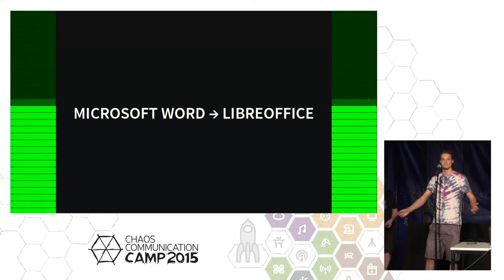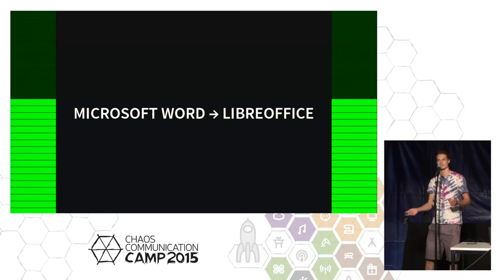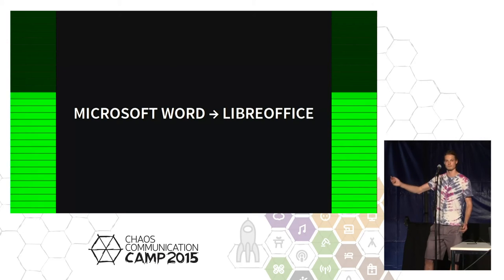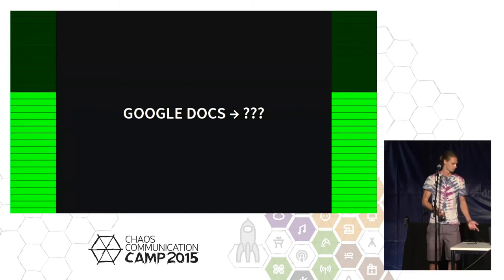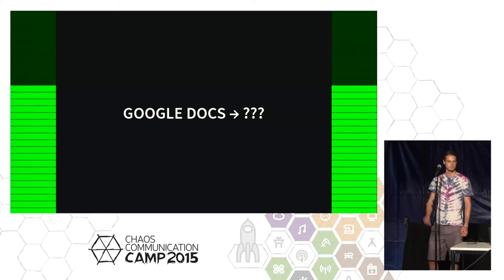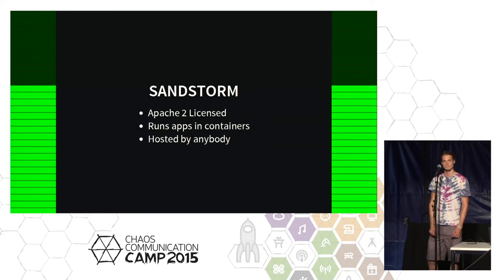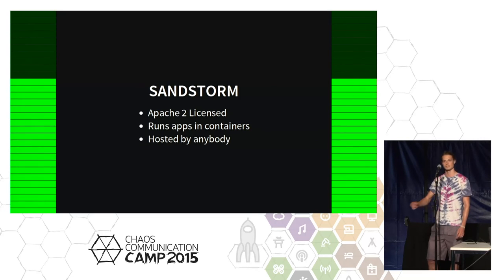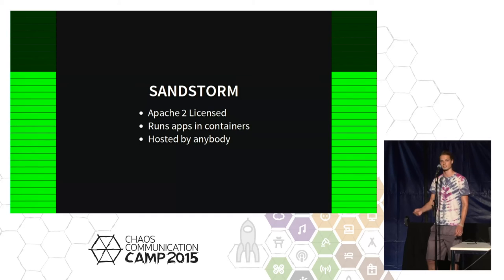With desktop software we have this thing with Microsoft Word and LibreOffice — people in this room will tell everyone to use LibreOffice, don't use proprietary software. But what do we have for Google Docs? We don't have anything right now, and I think this is a problem. Sandstorm is a platform which is Apache 2 licensed. You can run apps in Linux containers, and it's hosted by anybody — it could be hosted by yourself under your bed, or by an organization that you actually trust, unlike Google.